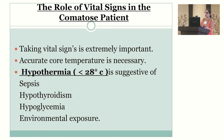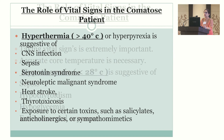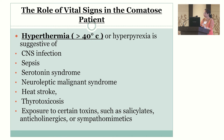Hypothermia can result from severe sepsis — remember, old patients may be septic without fever. Hypothyroidism or hypoglycemia can present with cold, clammy skin. We do receive unconscious beggars from the road suffering from hypothermia. If the patient is hyperthermic with temperature above 40°C, hyperpyrexia may suggest CNS infection, septicemia, serotonin syndrome, neuroleptic malignant syndrome, heat stroke, thyrotoxicosis, or exposure to toxins such as salicylates, anticholinergics, or sympathomimetics.